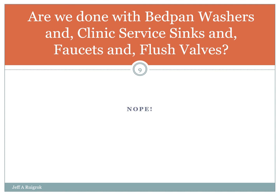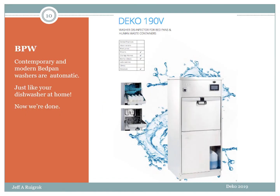Are we done with bedpan washers, clinic service sinks, faucets, and flush valves? Nope. Nowadays, those toilet-like apparatuses are used pretty much up north or in small hospitals. Large hospitals, if they use bedpan washers at all, would have an automatic machine. That machine is truly a bedpan washer on both 7493 and 7632A. You just slip the bedpans and urine containers in, hit the go button, and it washes them just like your dishwasher at home — just quite a bit bigger. And that's it — those are your three bedpan washer styles.